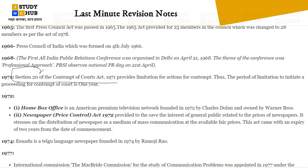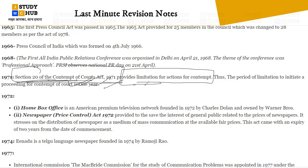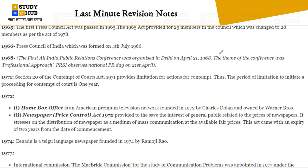In 1971, Section 20 of the Contempt of Courts Act 1971 provides a limitation for actions for contempt. The period of limitation to initiate a proceeding for contempt is only one year. Please note: the question has been asked — what is the limitation to initiate a proceeding for contempt of courts? The answer is one year.